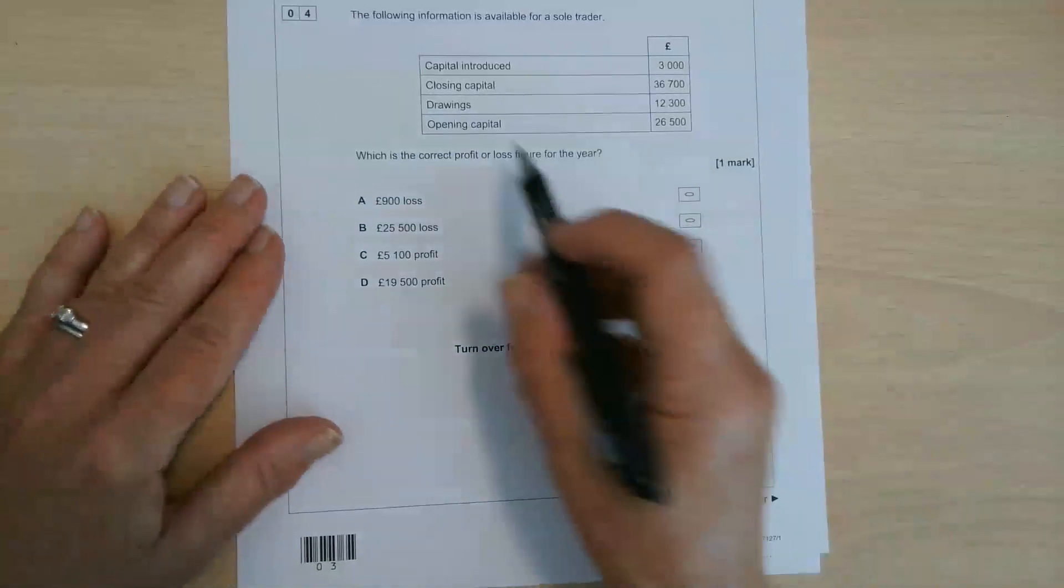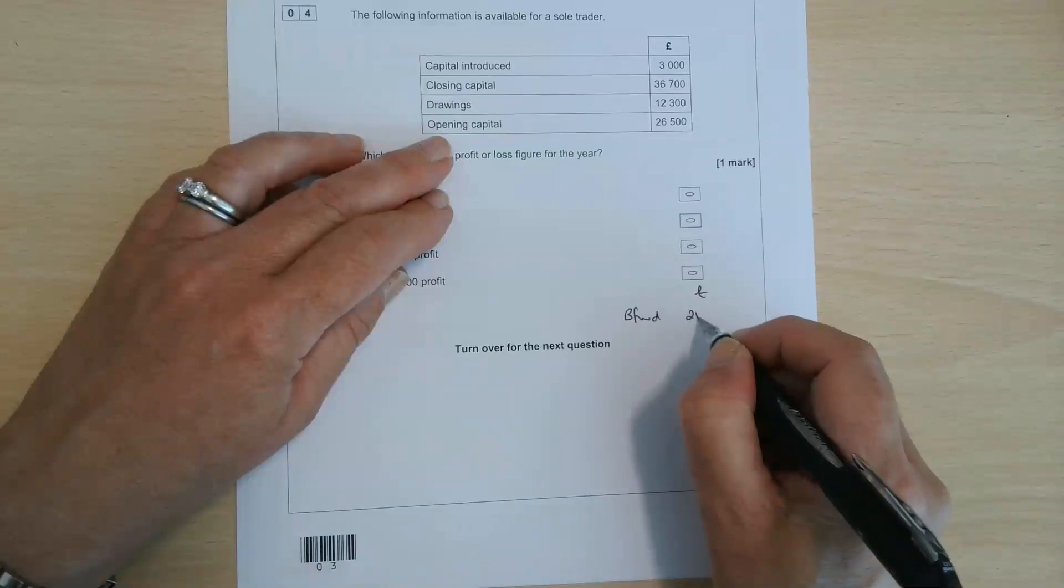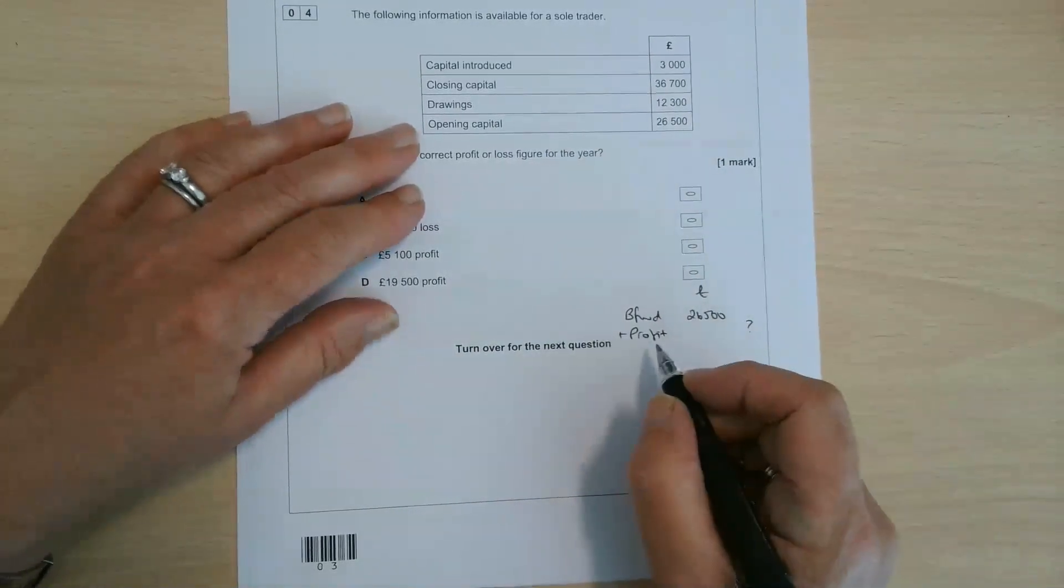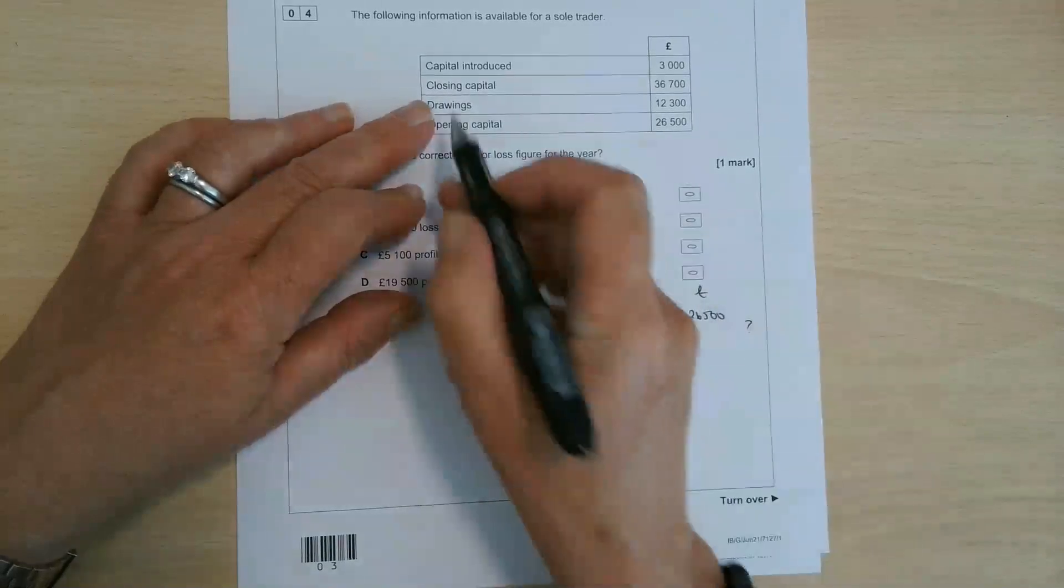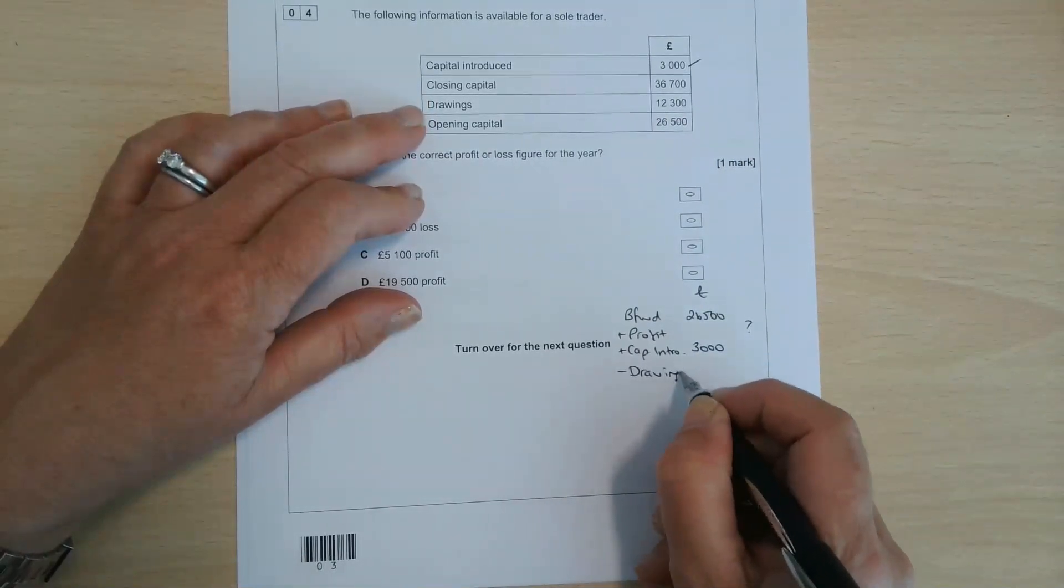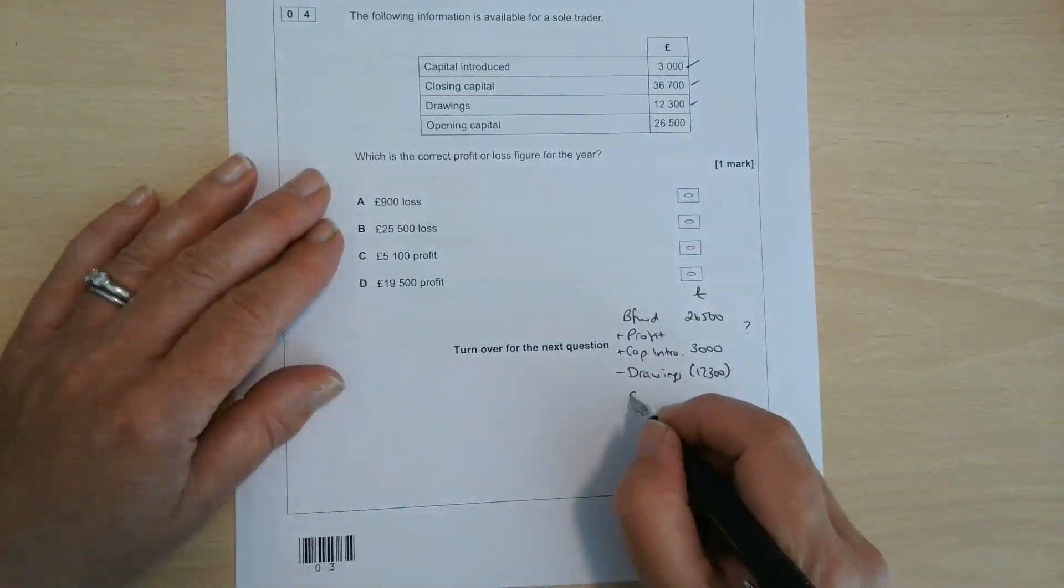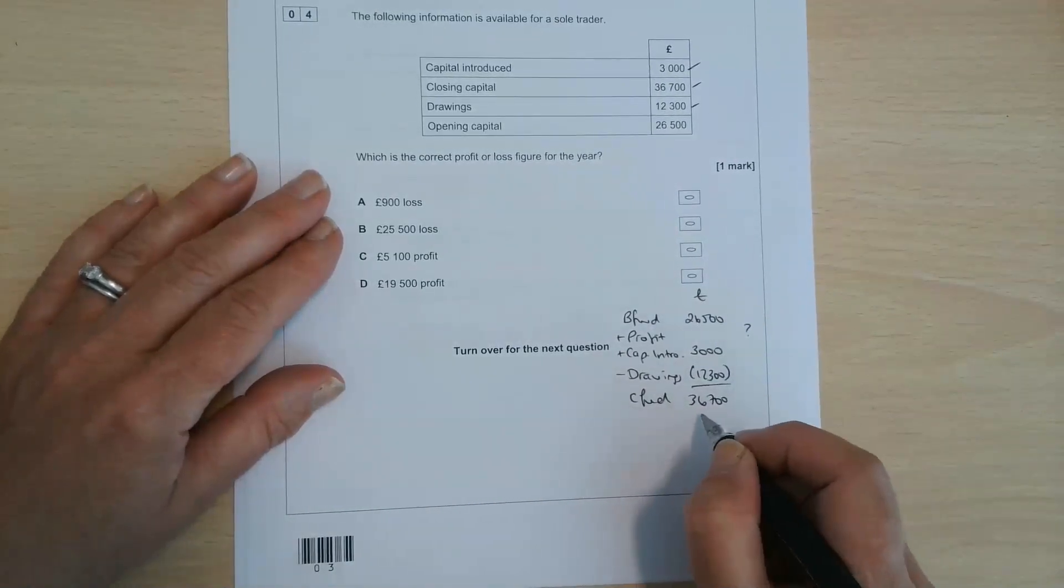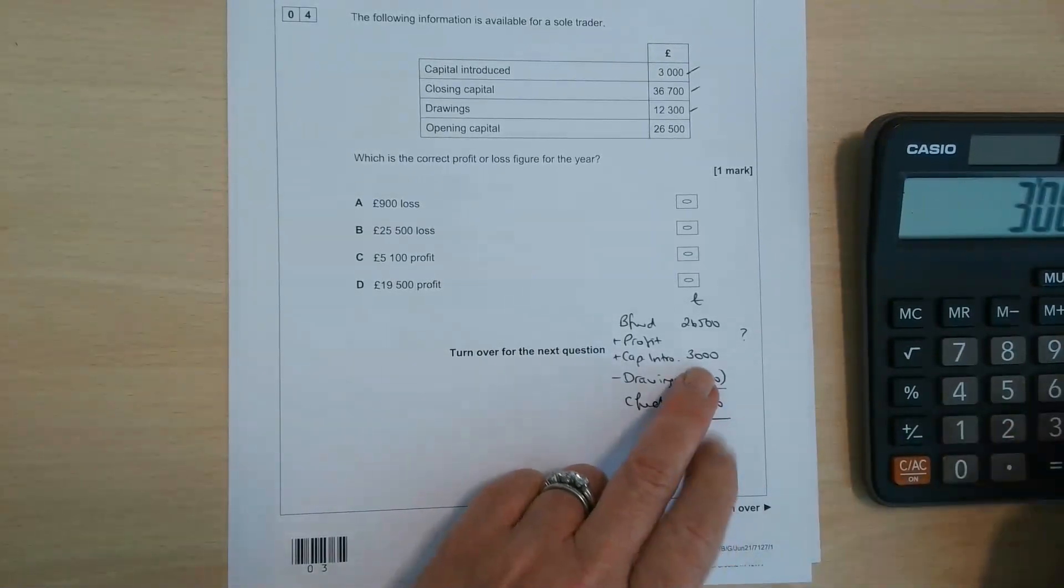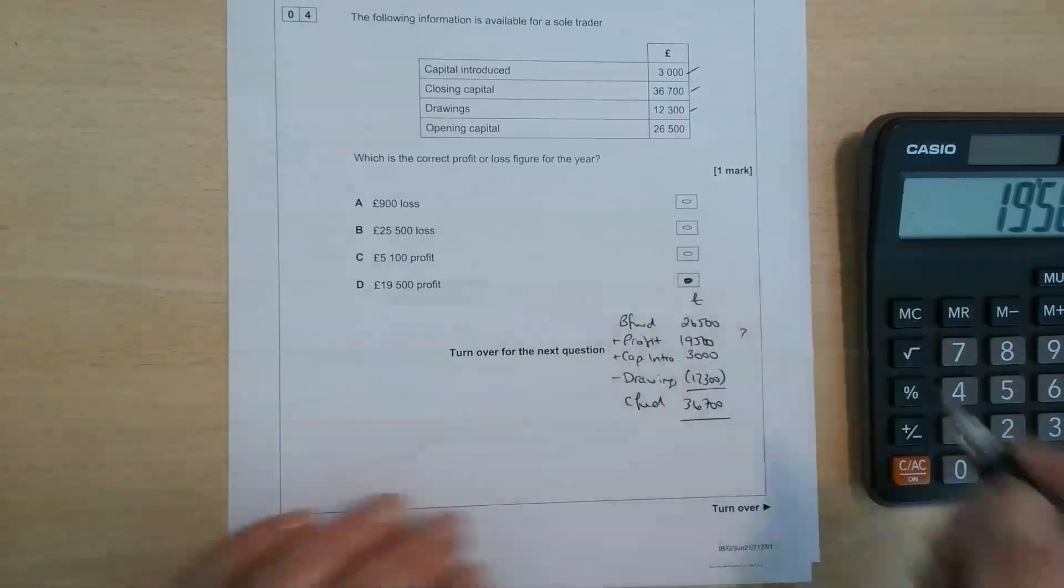Right, following information is available for a sole trader. We've got some information to put together a capital account. So I'm going to suggest we do that little calculation here. So we want the opening capital, 26,500. I think we're trying to find the missing profit or loss. So add the profit. We don't know what that is. Let's put a question mark there. We do know, though, that they've got some capital introduced. And we know that they've taken drawings, which are deducted in the capital account, 12,300. And the closing capital is 36,700. So if we work backwards, reversing the signs, 36,700 plus 12,300 minus 3,000 and minus 26,500 is 19,500 pounds profit. So the answer for number four is D.